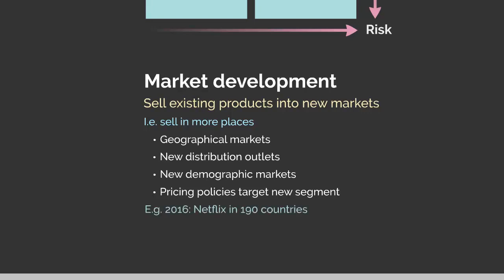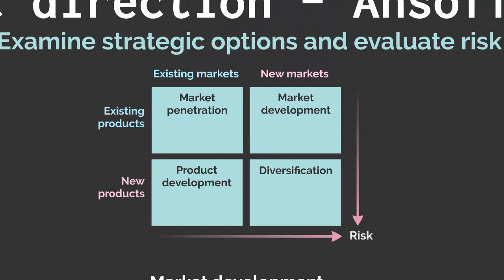Returning to the Netflix example: we know Netflix began in the US, but they didn't stop there. They began expanding internationally, and by 2016 they operated in 190 countries. That is how to execute market development.